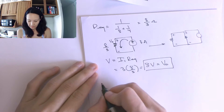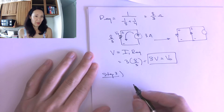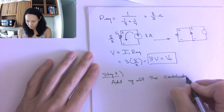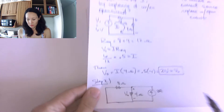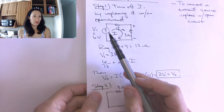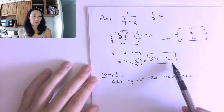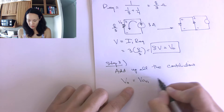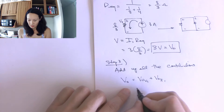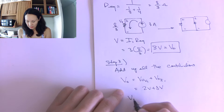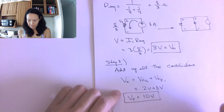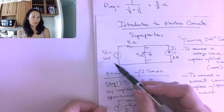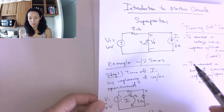Now I'm ready for the final step — step three, the fun part: we just add up all the contributions. Two volts is the contribution to V0 from the voltage source, and eight volts is the contribution to V0 from the current source. So V0 total is V0 due to V1 plus V0 due to I1, which is two volts plus eight volts — so my V0 for real is 10 volts. That is the voltage supplied to this resistor from both power sources, found by evaluating one source at a time.